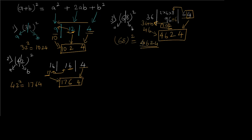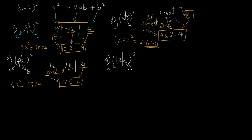Now let's calculate the square of a three-digit number — 122. The process is the same, but we need to be careful about how we split the number. Instead of splitting as 1 and 22 (where 22 is large), we split as 12 and 2, giving us a = 12 and b = 2. So a² is 12² = 144. The center part 2ab is 2 × 12 × 2 = 48. And b² is 2² = 4.